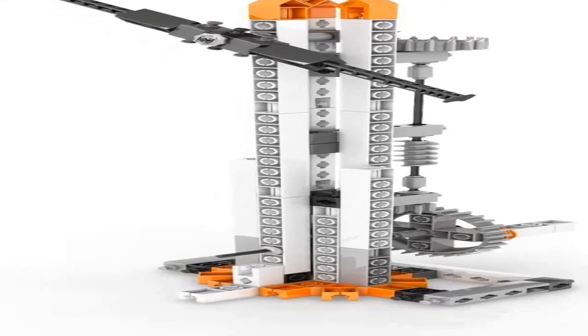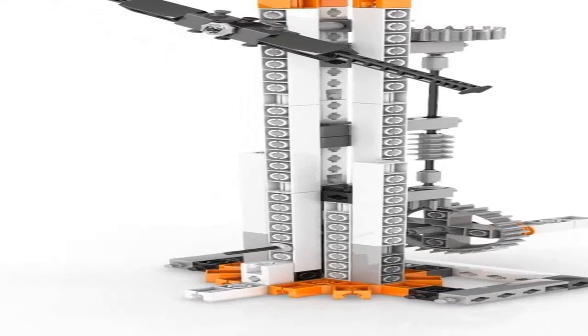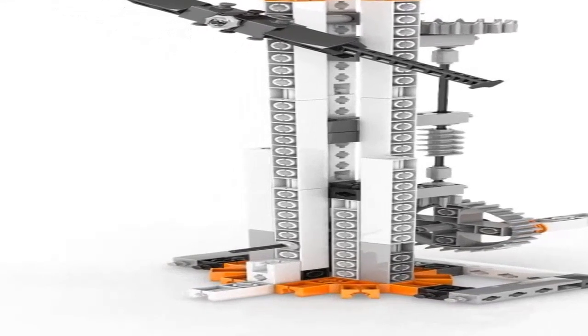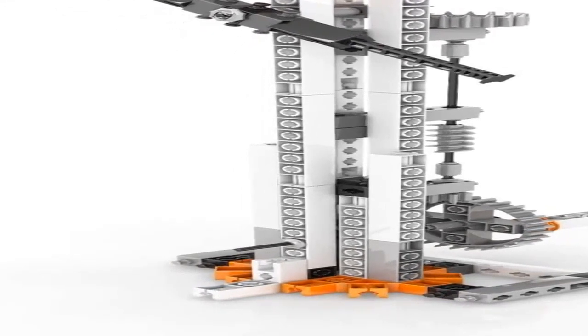Learn how screws can convert rotational motion to linear while greatly increasing force. Build 12 working models such as an experimental crane, a gearbox, a carousel, a helicopter, a screw press, and a crane with a rotating arm.